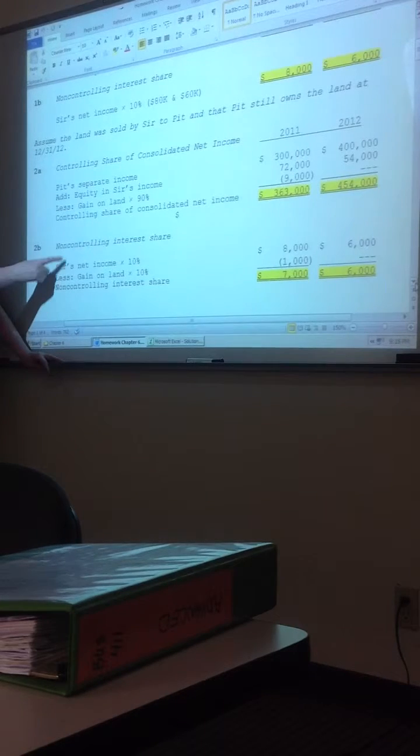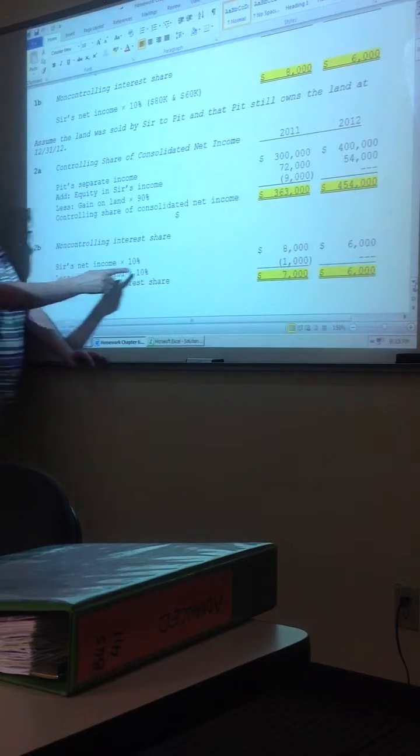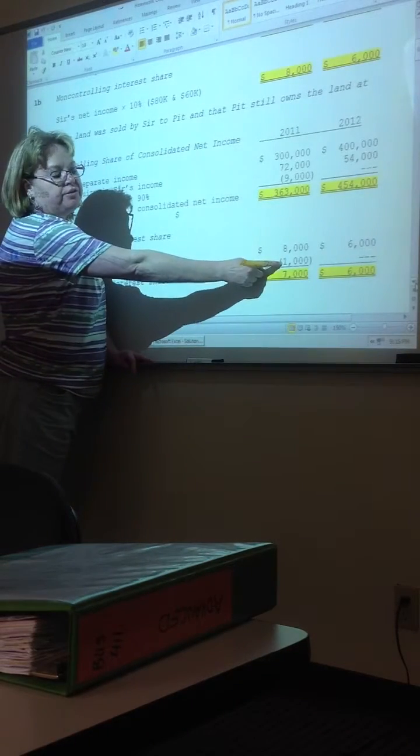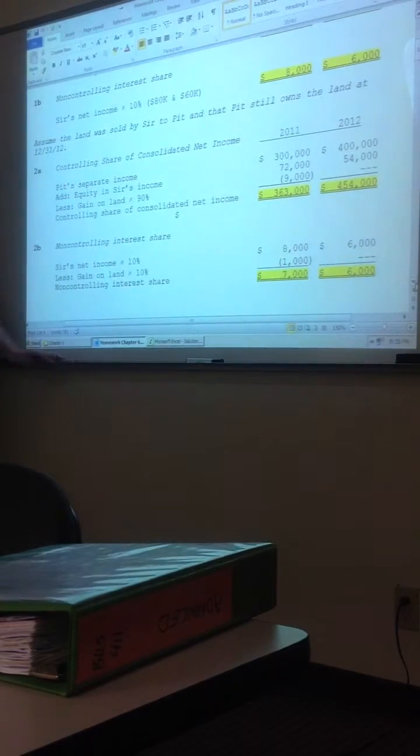And that means for the non-controlling people, they get 10% of the subsidiary's income, less 10% of that gain that we had to defer in the first year, no effect in the second year. Upstream or downstream? Does that make sense?